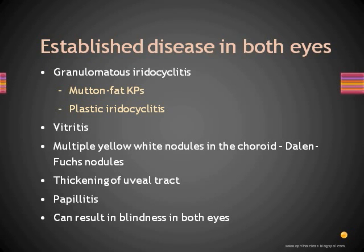The sequelae of this can be blinding. In the posterior segment, there is vitritis and multiple yellow-white nodules in the choroid called Dalen-Fuchs nodules. Histopathologically, these nodules lie between Bruch's membrane and the retinal pigment epithelium, and are found in very few conditions — specifically sympathetic ophthalmia, Vogt-Koyanagi-Harada syndrome, and possibly sarcoidosis. The entire uveal tract appears thickened. The patient can have papillitis. It is a chronic disease with exacerbations, and ultimately one could lose vision in both eyes.